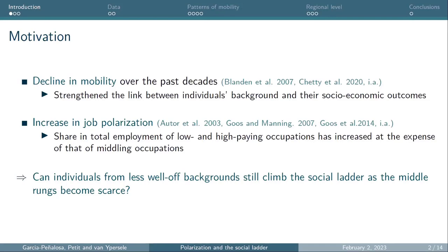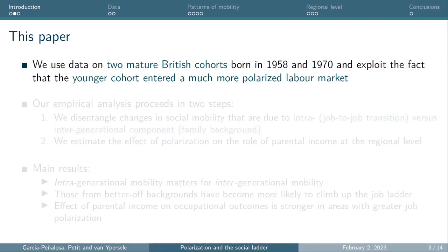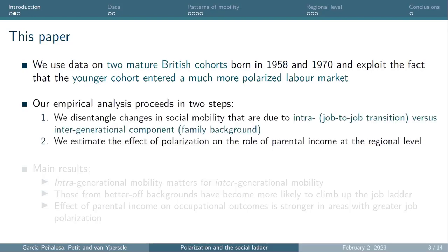To answer this question, we use two major British cohort studies: one born in 1958 (the NCDS) and one born in 1970 (the BCS). We expect that the younger cohort entered a labor market that was much more polarized compared to the older cohort. We proceed in two steps. First, we disentangle changes in social mobility due to the intragenerational component — the job-to-job transitions — looking at entry occupations when they are young and their mature occupation at age 42. Second, we look at the intergenerational component, specifically the role of family background such as parental income in explaining the social mobility of their children.